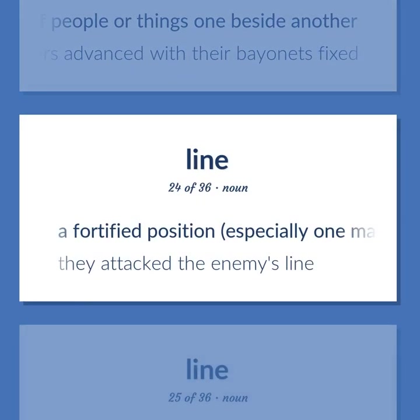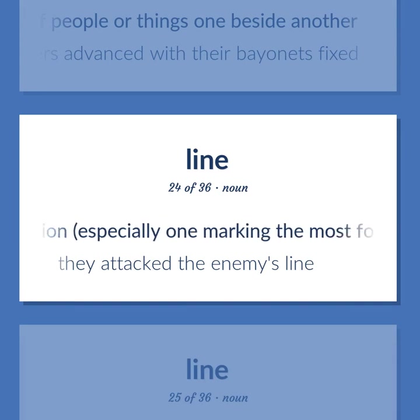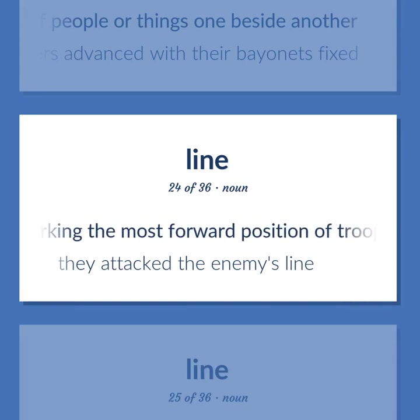Line: a fortified position, especially one marking the most forward position of troops. Example: they attacked the enemy's line.